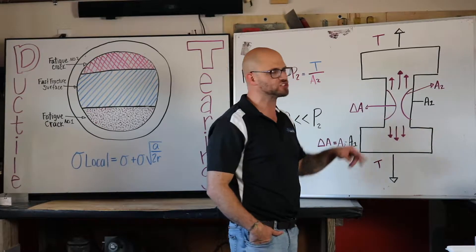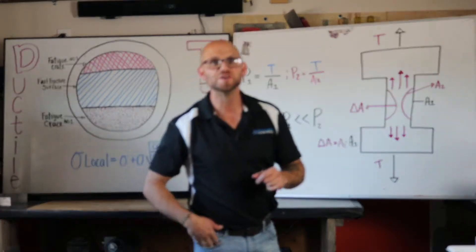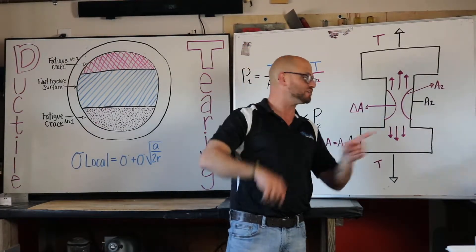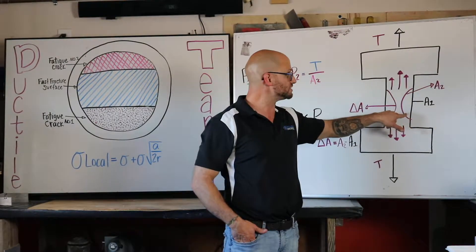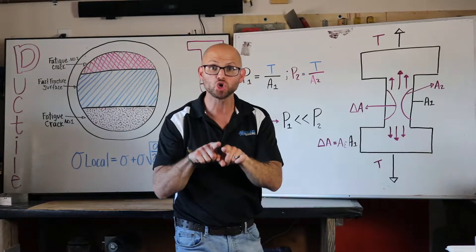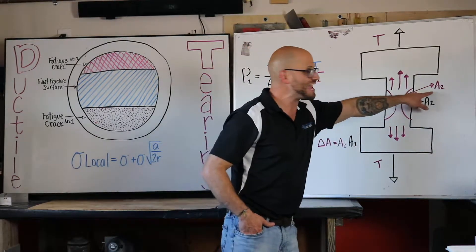The first piece of that failure scenario is called necking. When the material stretches out and the cross-sectional area from the original A₁ draws down to a smaller cross-sectional area A₂.